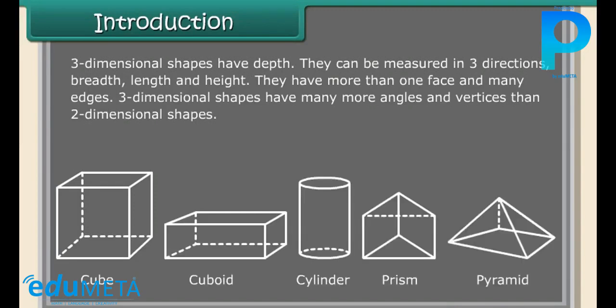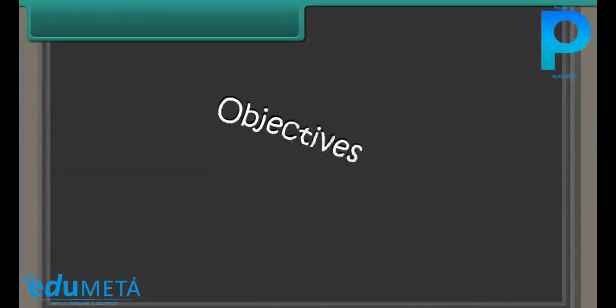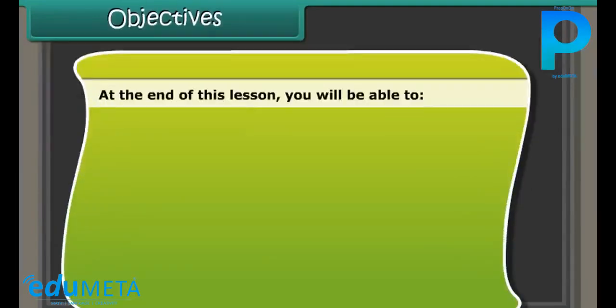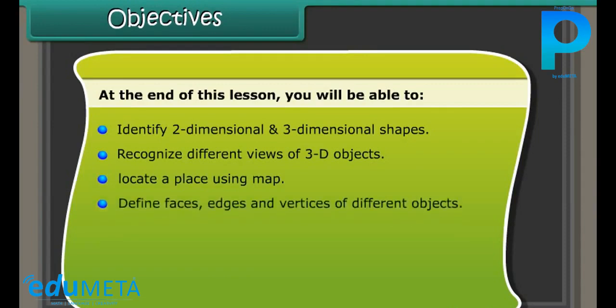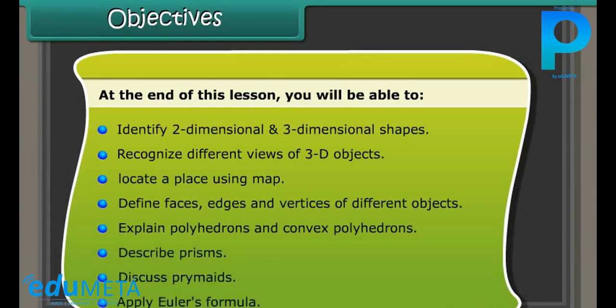Prism, pyramid, etc. Two-dimensional shapes, three-dimensional shapes. Objectives: At the end of this lesson you'll be able to identify two-dimensional and three-dimensional shapes, recognize different views of 3D objects, locate a place using a map, define faces, edges, and vertices of different objects, explain polyhedron and convex polyhedrons, describe prisms, discuss pyramids, and apply Euler's formula.